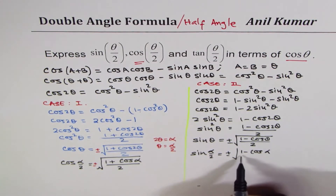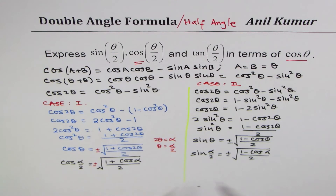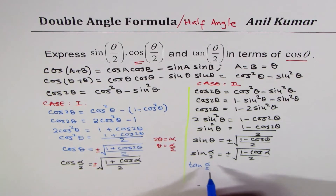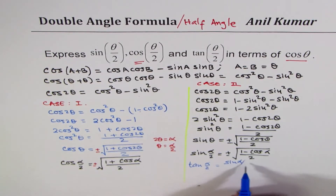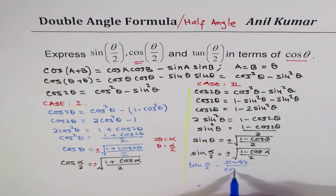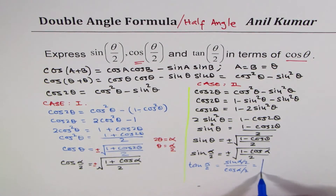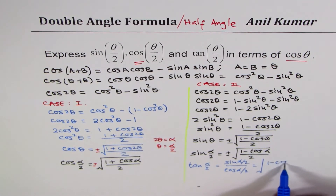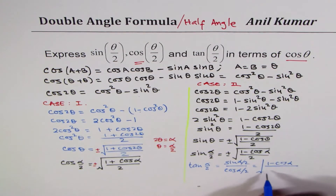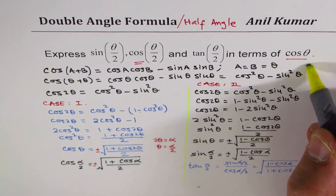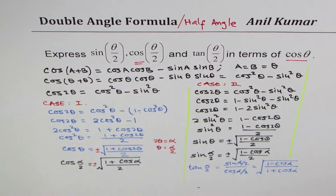Now we know sin(α/2) and cos(α/2), so we can find tan(α/2). We have tan(α/2) = sin(α/2) divided by cos(α/2). The square root terms cancel, and we are left with tan(α/2) = ±√((1 − cos α)/(1 + cos α)). So we have derived all three formulas.